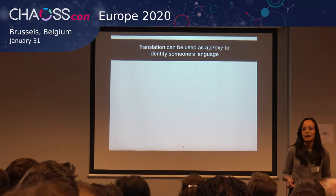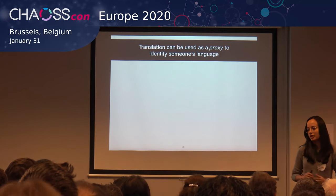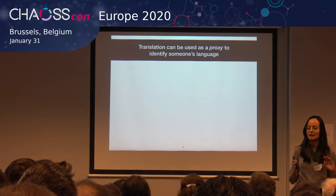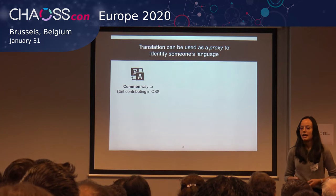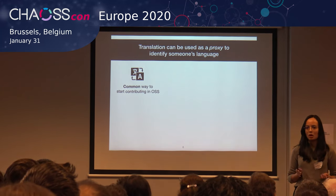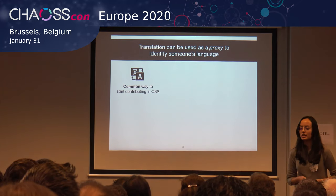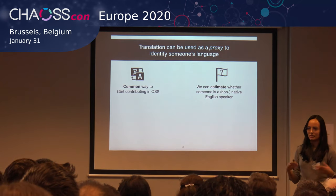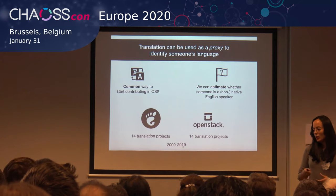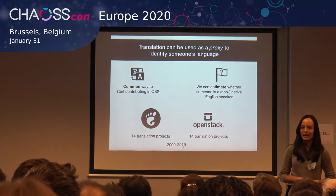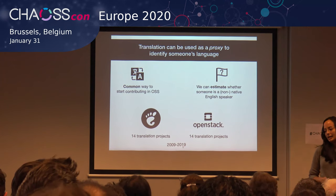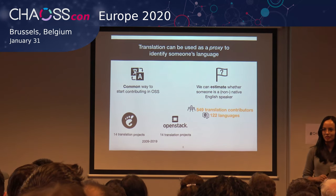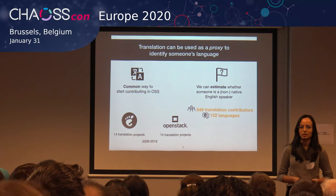To analyze this, we need to identify someone's language, which is tricky. So we started from translation — we mined translation projects to somehow identify someone's first language. We do this because translation is one of the common ways to start contributing to open source projects, and with that we can estimate someone's first language based on the language they contribute the most. We mined two ecosystems, GNOME and OpenStack, 14 projects from each, and analyzed about 10 years of data. As a result, we found 549 translation contributors who did translation to 122 languages.